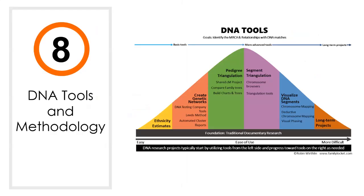Step number eight in the Research Like a Pro with DNA method is to use DNA tools and methodology. This DNA tools bell curve that I developed shows a process of working with your DNA results. We'll be talking about visualizing DNA segments and using chromosome browsers in this video.